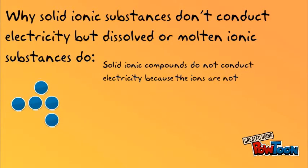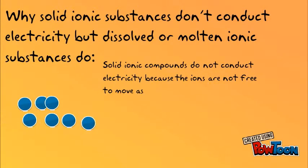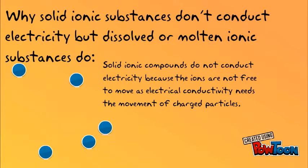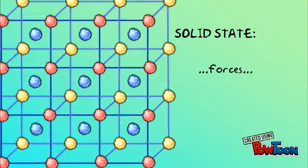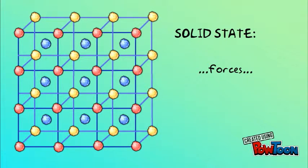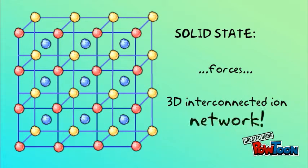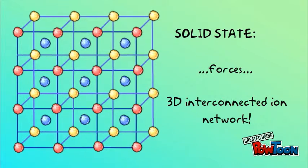Solid ionic compounds do not conduct electricity because the ions are not free to move, as electrical conductivity means the movement of charged particles. In a solid state, forces hold the ions together in a crystal lattice structure, which is a 3D interconnected ion network.